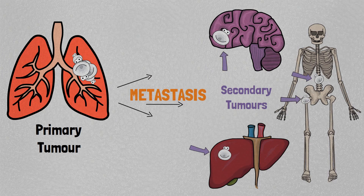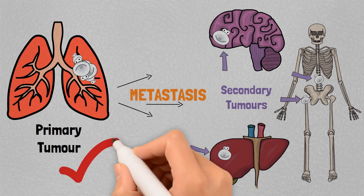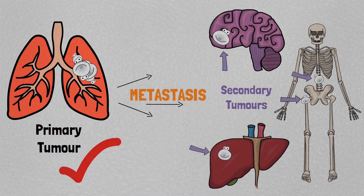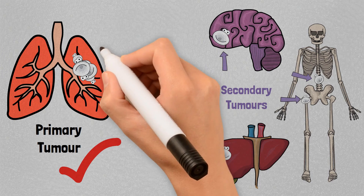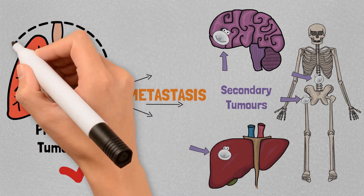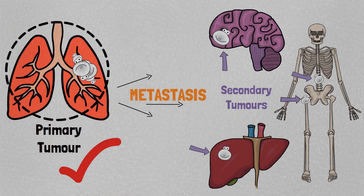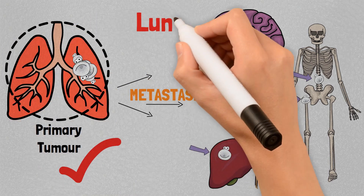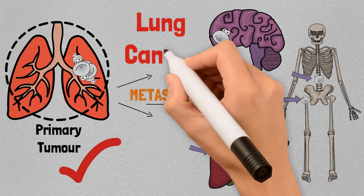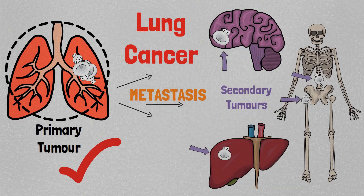Cancer is always named after the site of the primary tumour. For example, in this case, as the primary tumour developed in the lungs, it will be called lung cancer and not brain, bone or liver cancer.